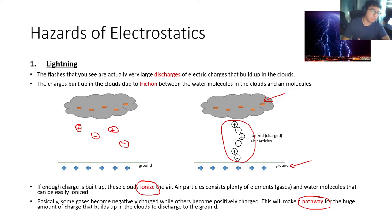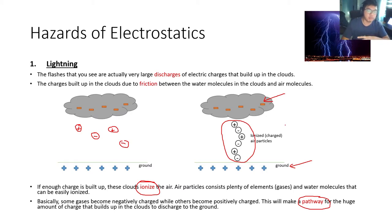Charged objects want to make themselves neutral — they want to remove the excess charges from themselves as fast as possible. So when you have this arrangement of ions in the air, the charges will move through the ions and into the ground through this pathway. And this is where lightning comes from.